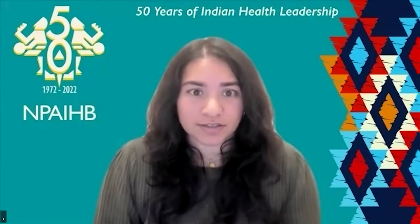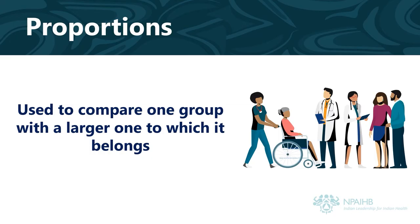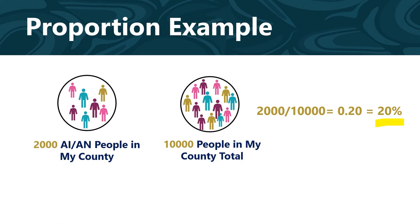Let's talk about how to compare different groups' health data to one another. Proportions, rates, and rate ratios are commonly used to compare one group to another. A proportion is used to compare one group with a larger one to which it belongs. An example is the proportion of the population who are native. Based on the 2010 census, 2,000 people in my county identified as AIAN, and the total population of my county was 10,000. Therefore, the proportion of people in my county who identified as native in 2010 was 20%, calculated by dividing 2,000 by 10,000.